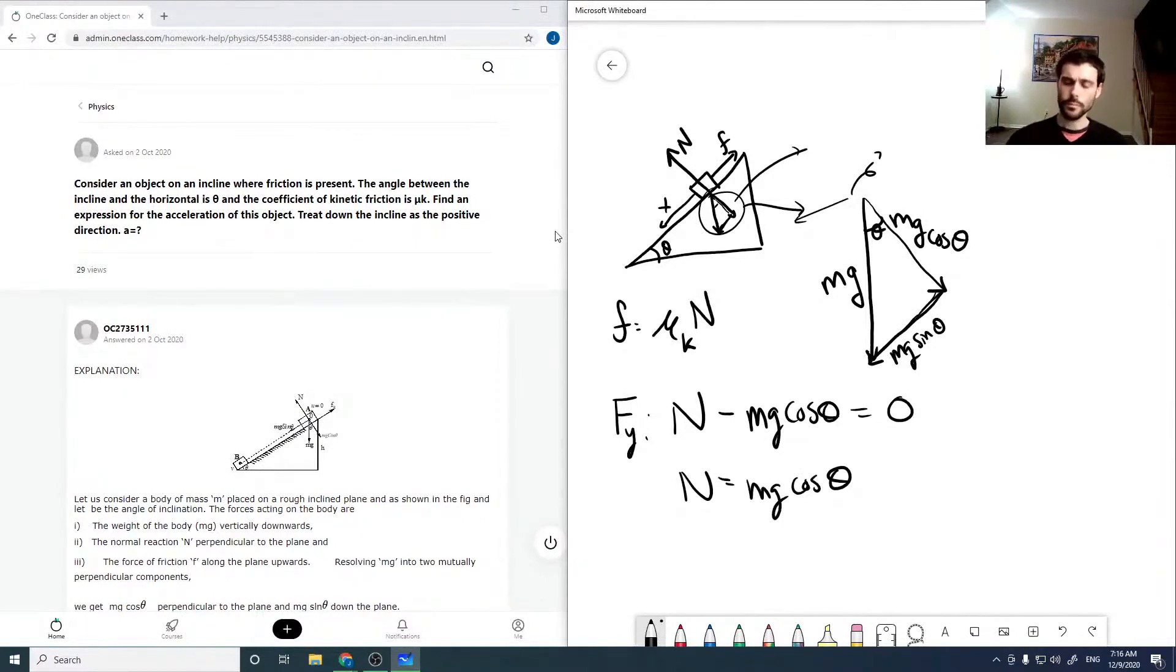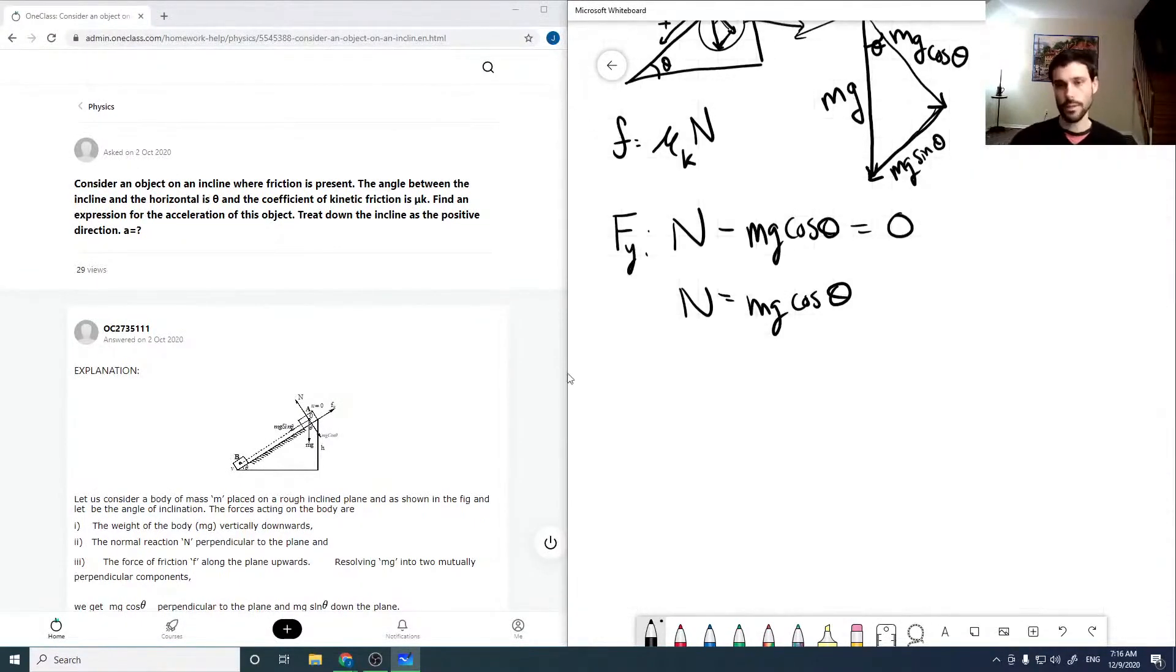All right, so that solves for our normal. And now in the x direction, taking down the slope as positive, mg sin theta is our gravitational force, and then we're going to subtract our friction, and it equals ma. So there's our acceleration. Placing in values for our frictional force that we've solved for, so mg sin theta minus our kinetic coefficient of friction times our normal, which is mg cos theta, is equal to ma.